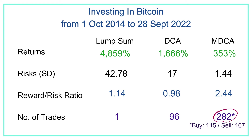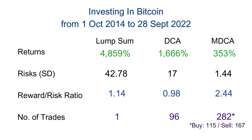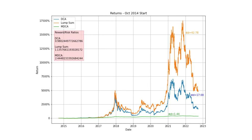Movement-Based DCA involves much more effort in terms of maintenance and trading costs, so you might want to take that into consideration when deciding which strategy is best for you. Let me share a graph generated using Python — it shows in orange the lump sum investment returns, in blue the Time-Based DCA returns, and in green the Movement-Based DCA returns. Hopefully this will give you a good idea of how returns change over the whole eight-year period.